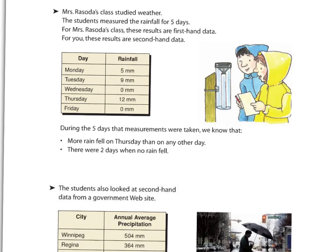Let's take a look at their data. They had 5 millimeters on Monday, 9 on Tuesday, 0 on Wednesday, 12 on Thursday, and 1 on Friday. From this data, we can see that more rain fell on Thursday than any other day. There were two days with no rainfall — Wednesday and Friday. For them this would be considered first-hand data, whereas for us, because we're looking at what they've collected, it becomes second-hand data.